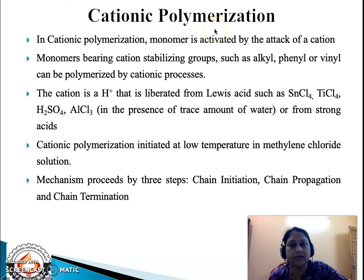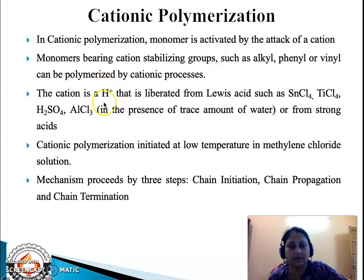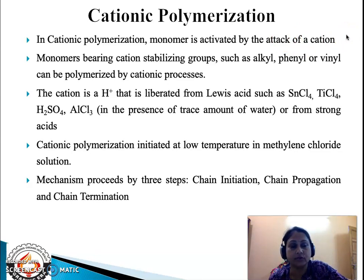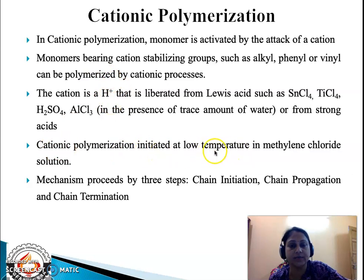Under cationic polymerization, the attack is via a cation — usually an H⁺ ion — liberated either from Lewis acids or from very strong acids. The monomers attacked by this H⁺ ion usually contain a double bond, and besides the double bond, there is a presence of electron-releasing substituents like alkyl groups, phenyl groups, or vinyl groups. These groups help in the attack of a proton. The cationic polymerization is initiated at low temperature in methylene chloride solution.